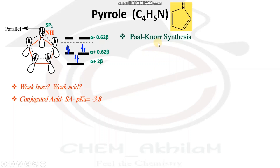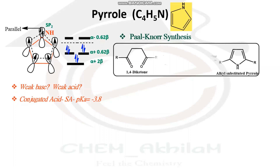Now we can look at some synthesis methods of pyrrole. The first method is Paal-Knorr synthesis. In Paal-Knorr synthesis, a 1,4-diketone is treated with ammonia, a primary amine, or hydrazine. It forms a ring compound, normally with some substitution. This is one of the important synthetic methods of pyrrole.